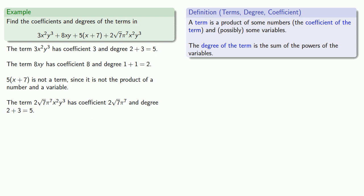It's worth noting that 3x squared y cubed and 2 root 7 pi to the 7th x squared y cubed have the same variables, x and y, raised to the same powers, 2 and 3. And this means they are like terms.